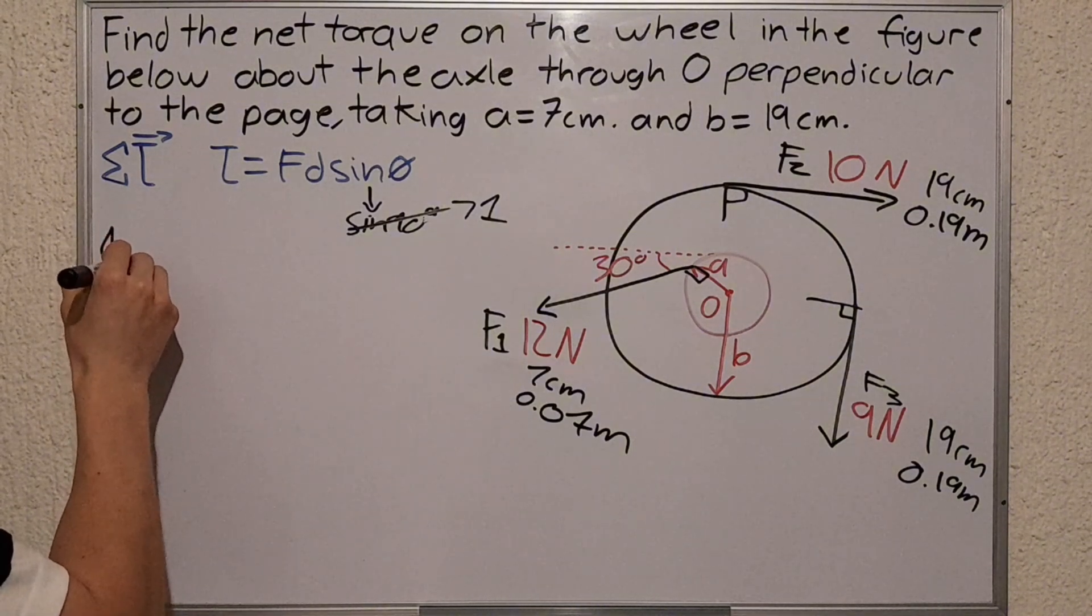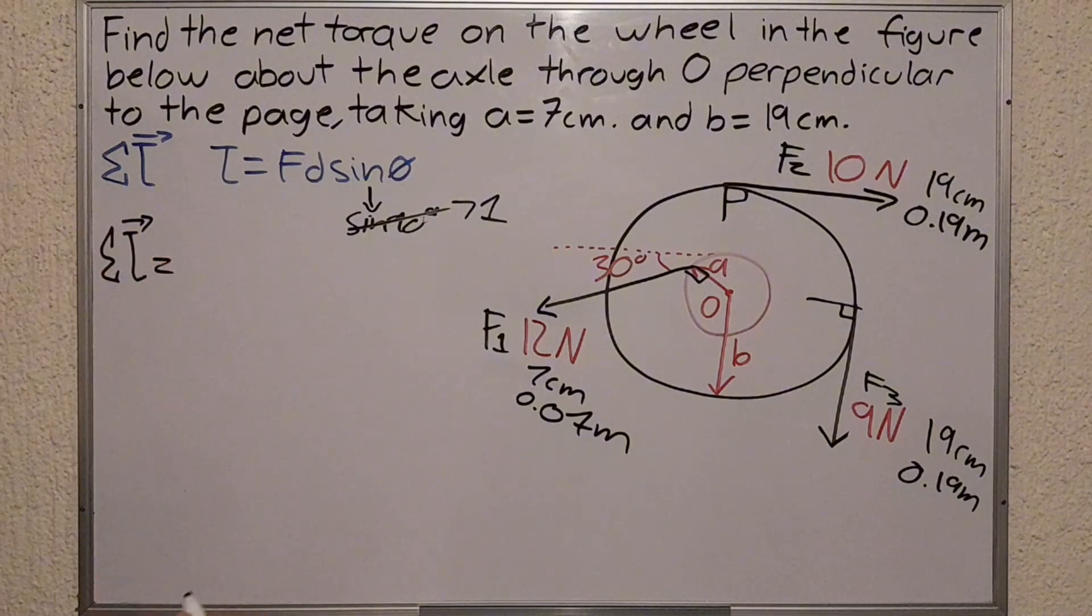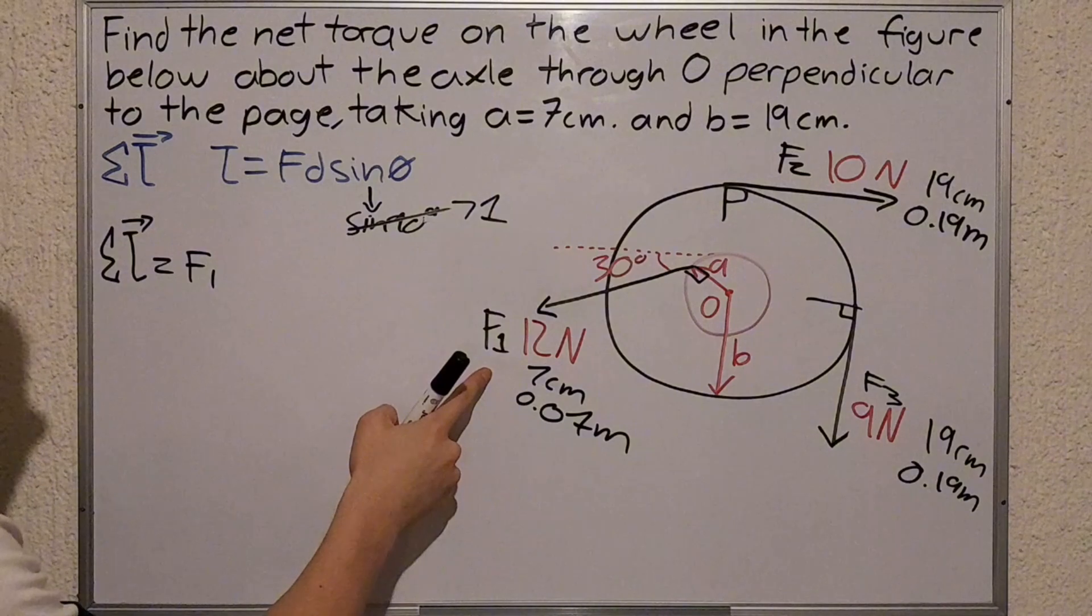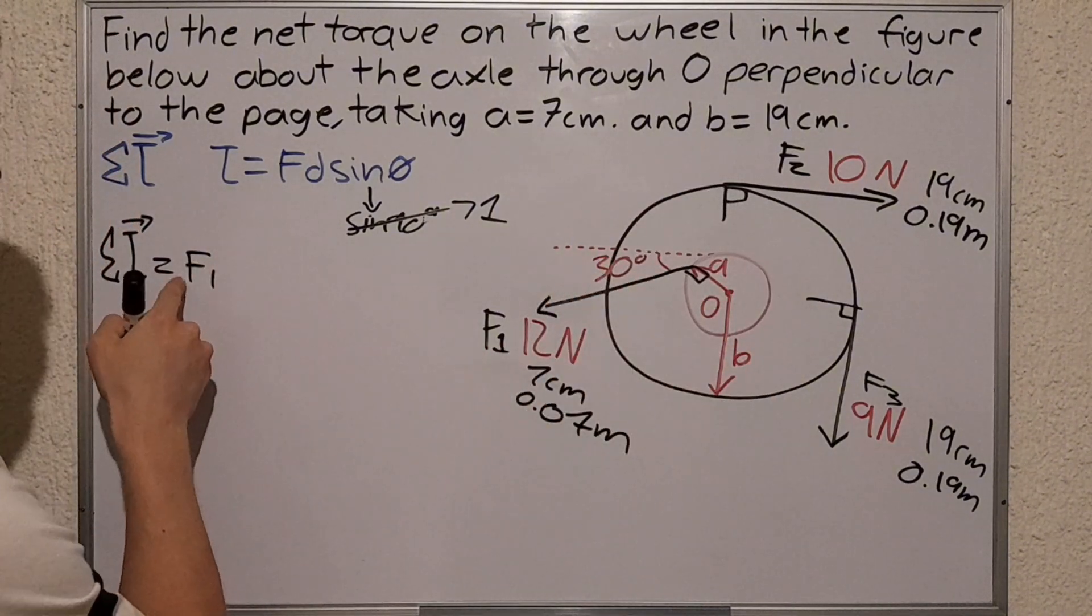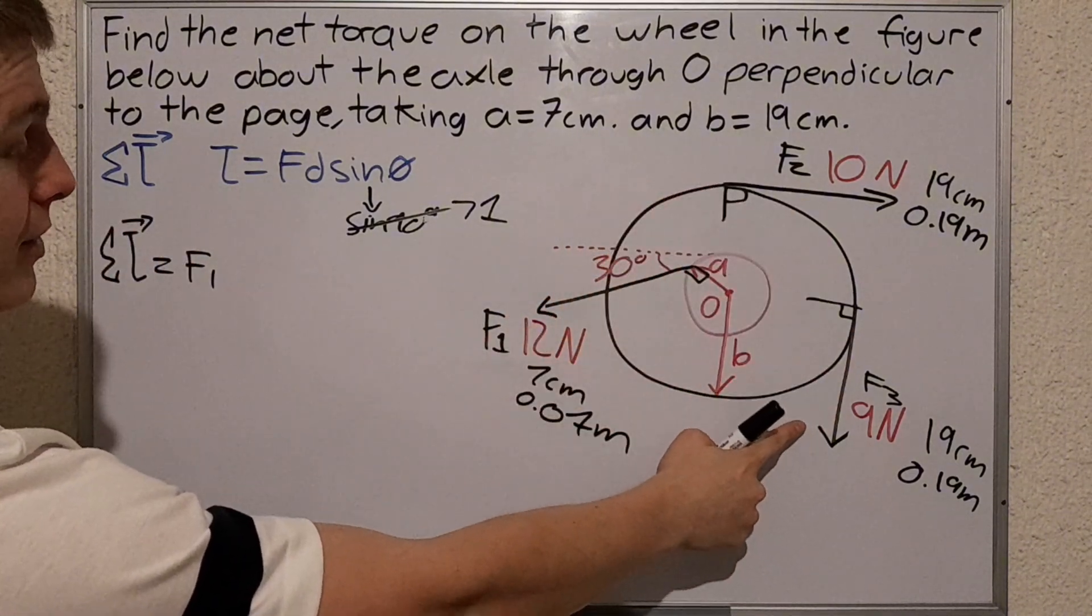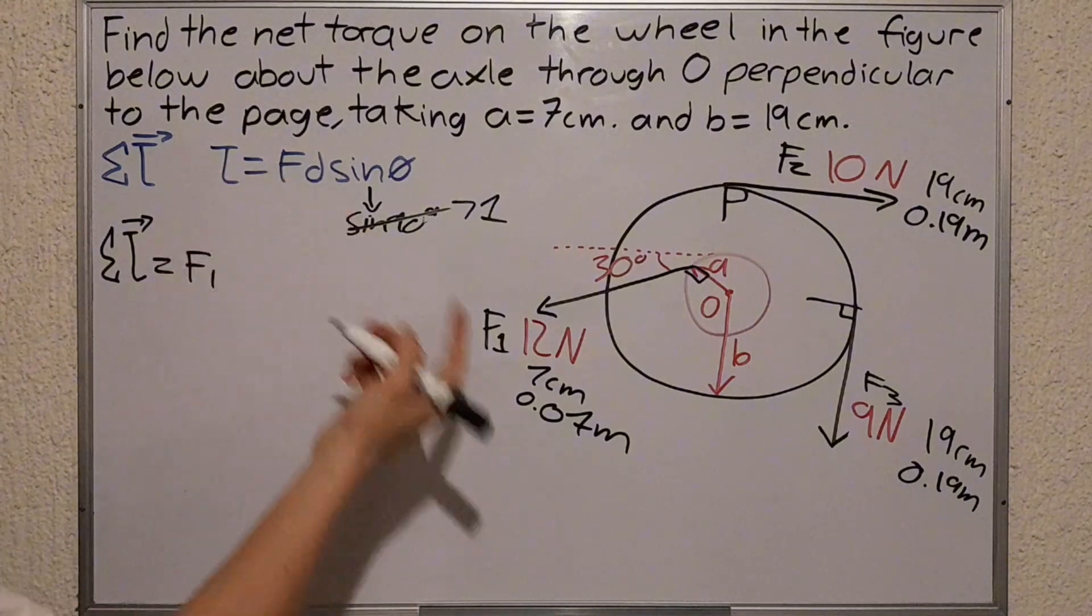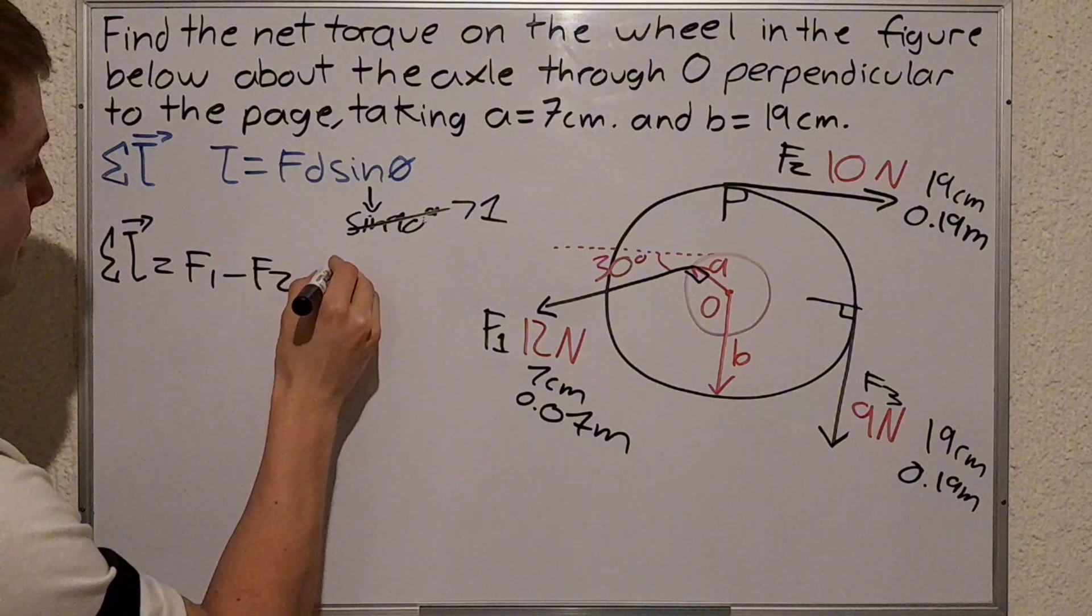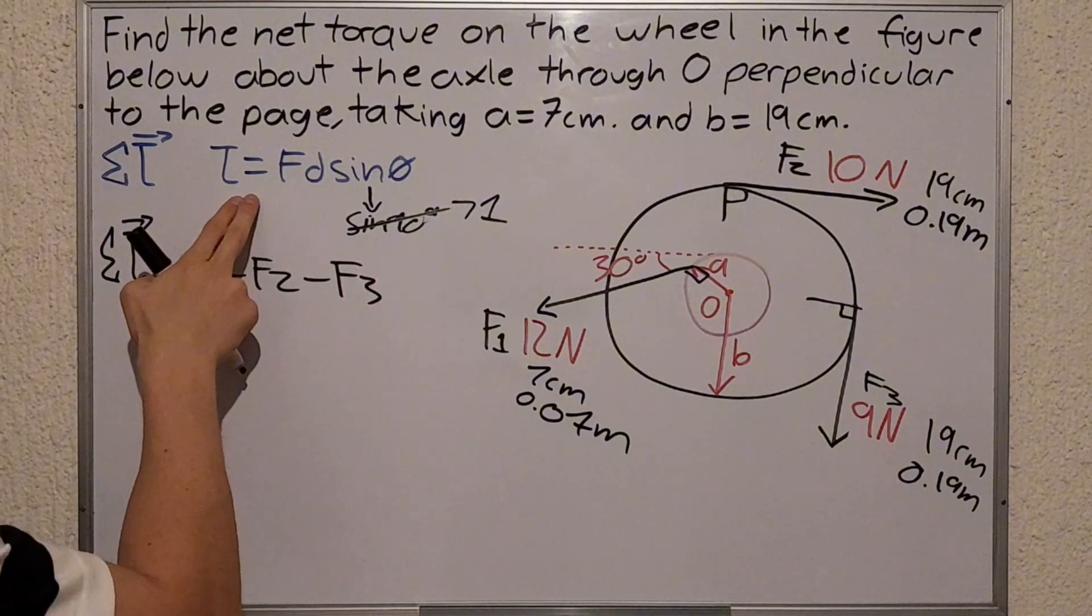Now I'm gonna work with my formula, with my sum of the torques. It's gonna be force 1, and this force goes counterclockwise so its sign is positive. Remember, force 2 and force 3 are going clockwise. This means their sign will be negative, so it is minus F2 and minus F3.